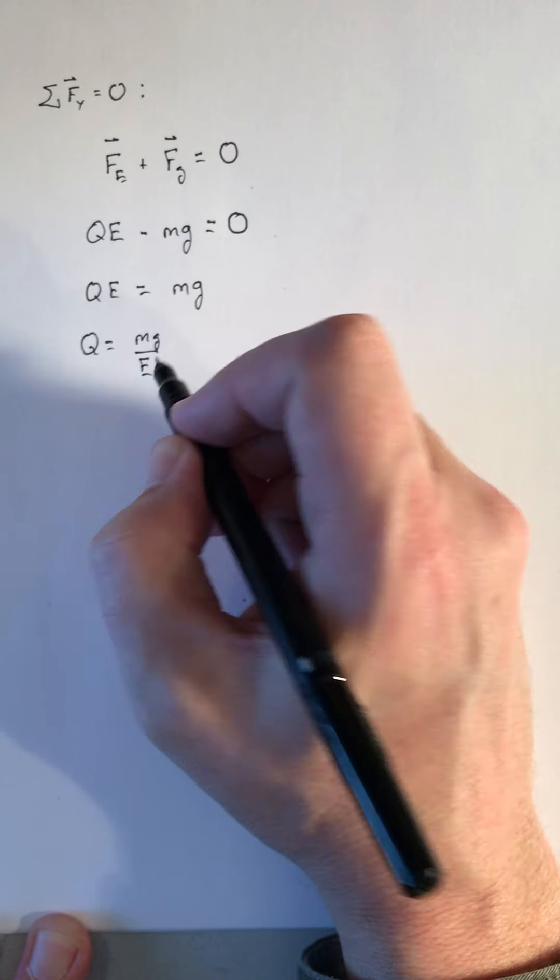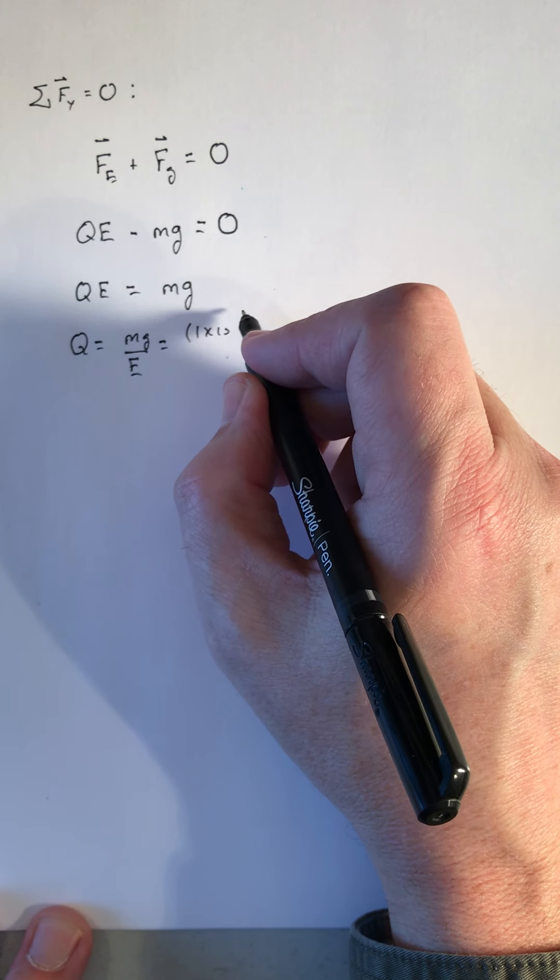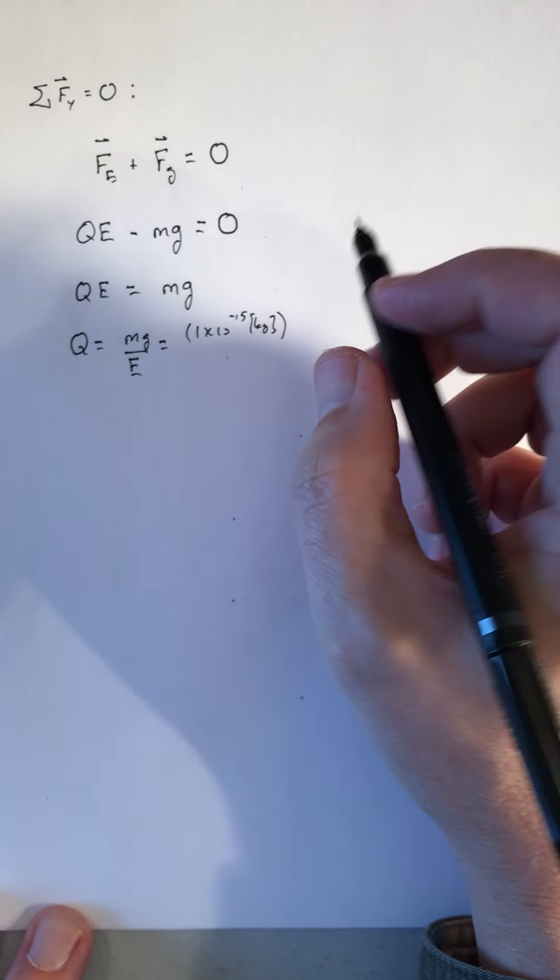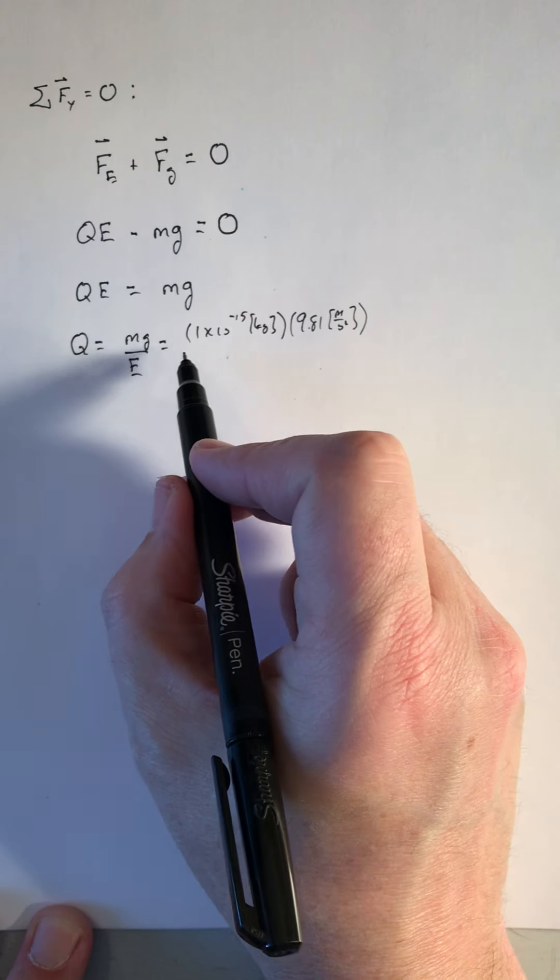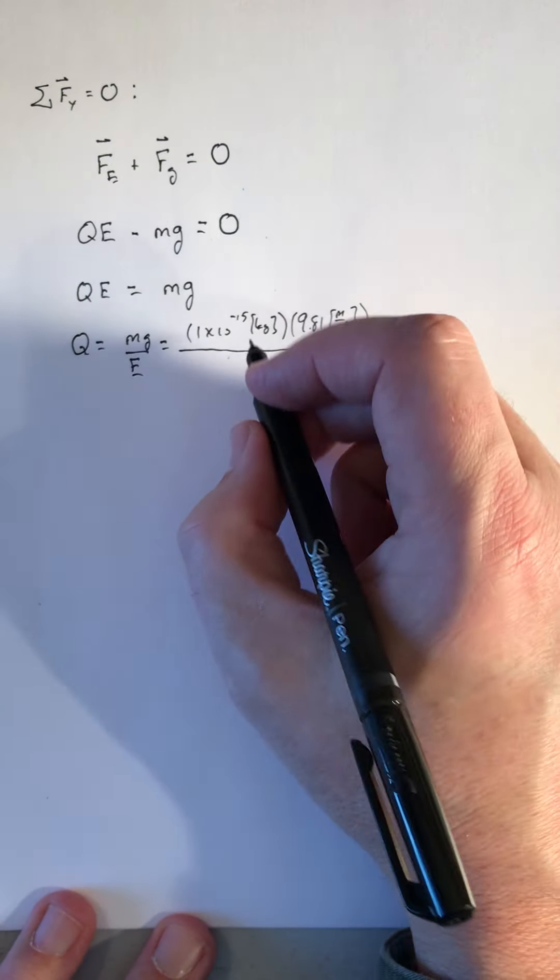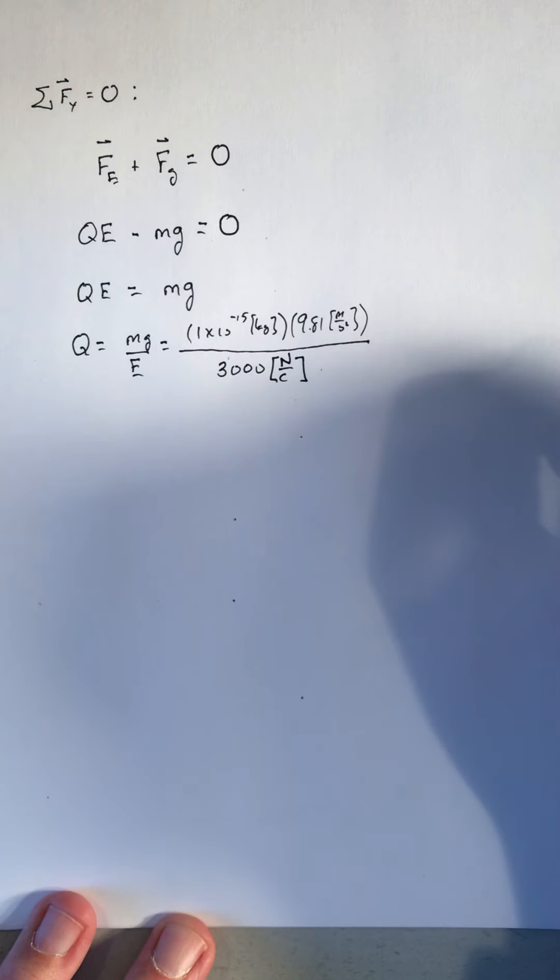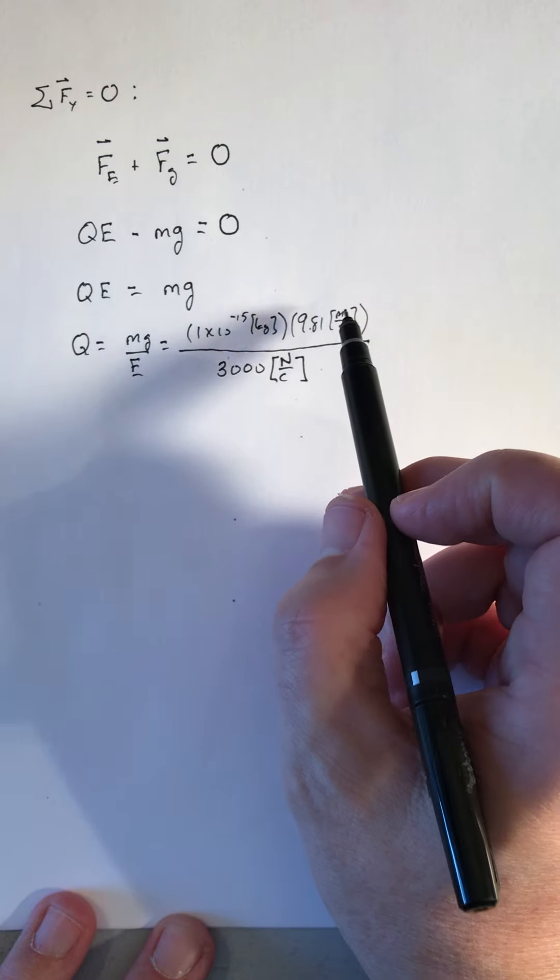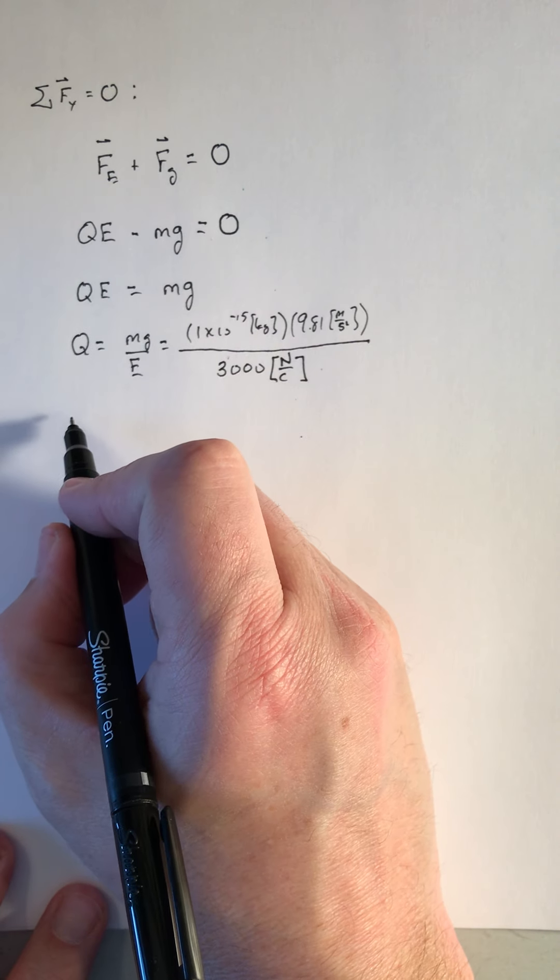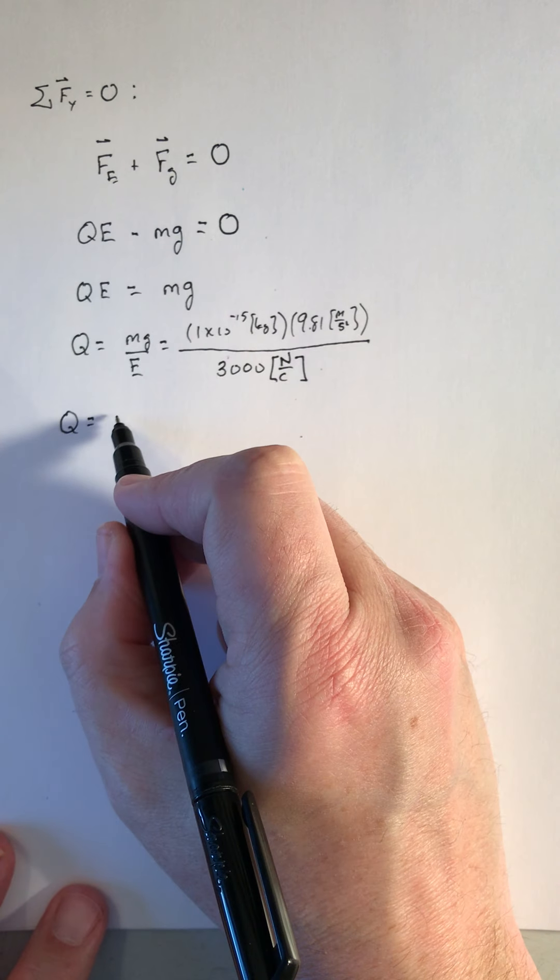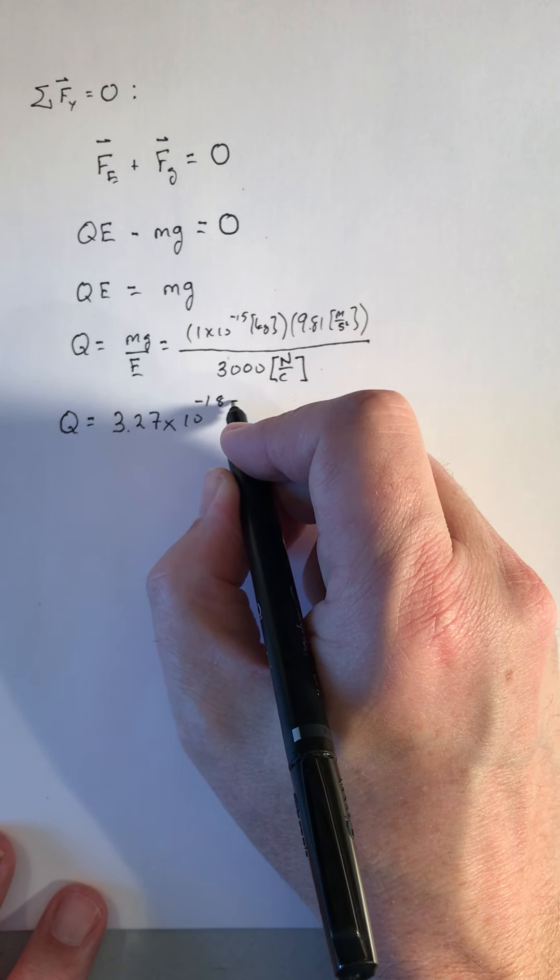The weight of the oil drop over the electric field strength. The mass was 1 times 10 to the minus 15 kilograms. g, 9.81 meters per second squared. And the electric field strength we just found, and now I'm going to write it as newtons per coulomb instead of volts per meter, because what I have in the numerator, kilogram meter per second squared, is a newton. So we'll arrive at charge, just for the sake of argument with significant figures here, 3.27 times 10 to the minus 18 coulombs.